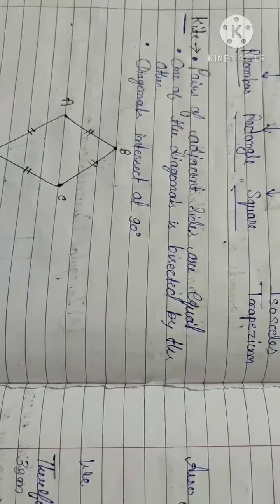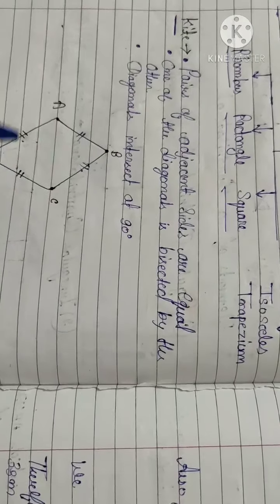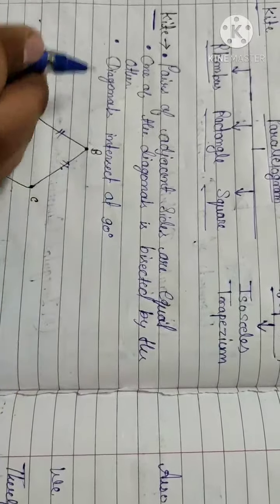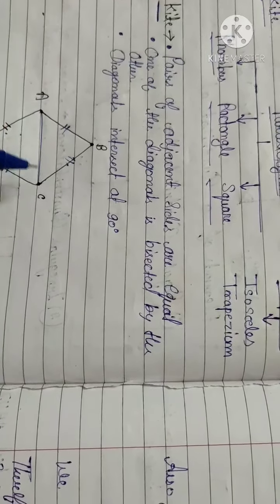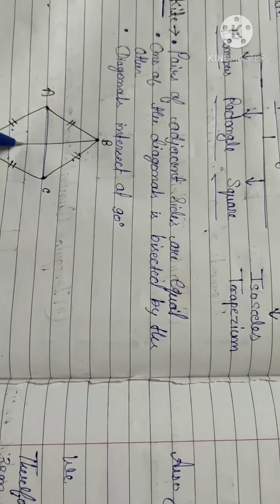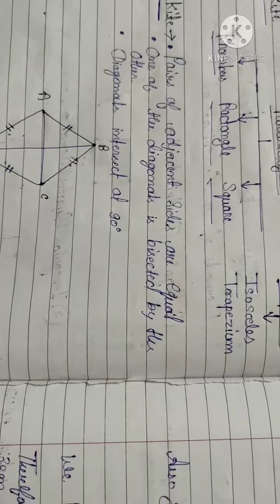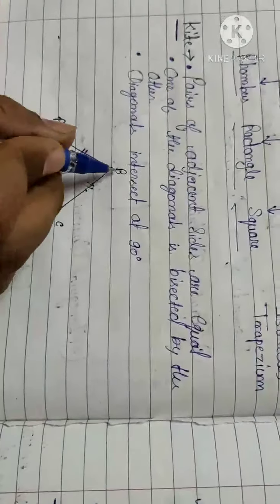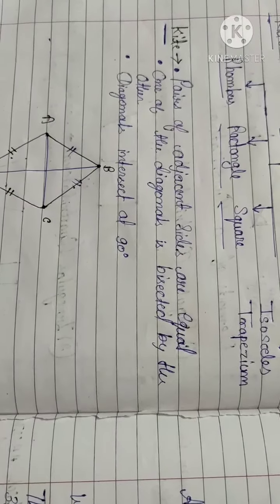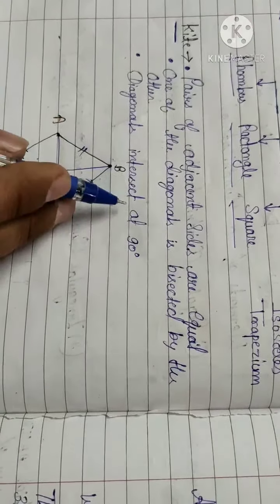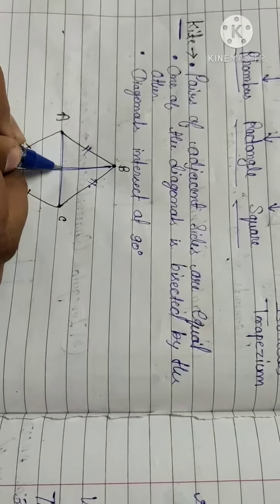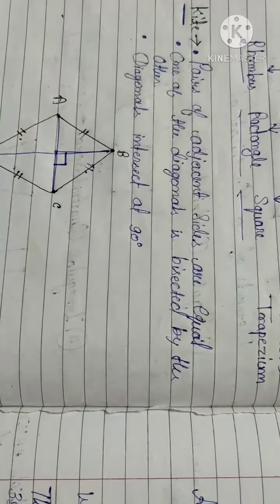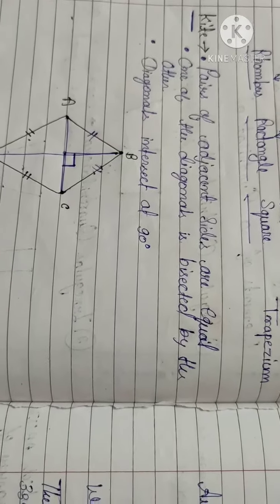In a kite, one of the diagonals bisects the other. Draw the diagonal and vertex to vertex — one diagonal bisects the other. The diagonals of a kite intersect at 90 degrees.